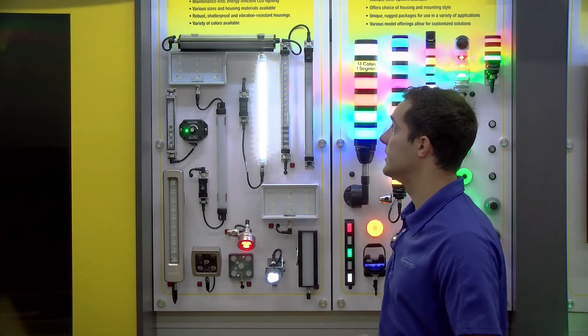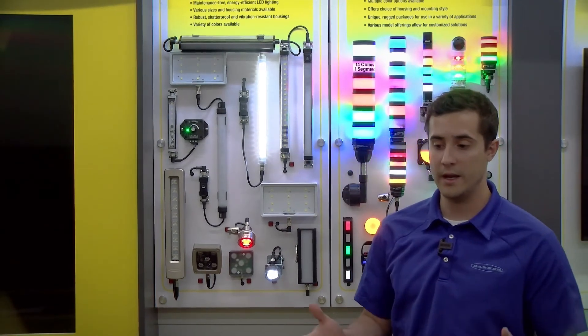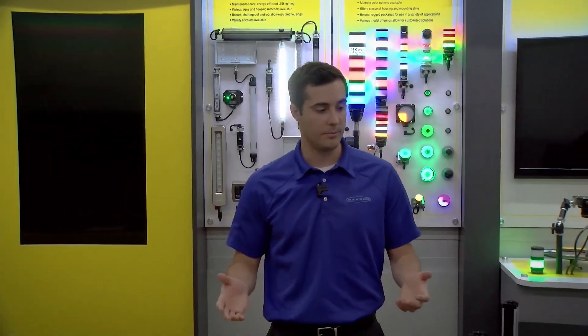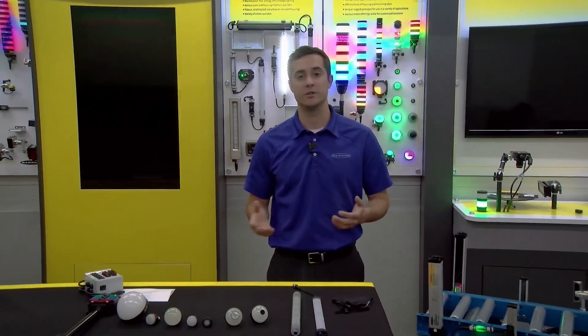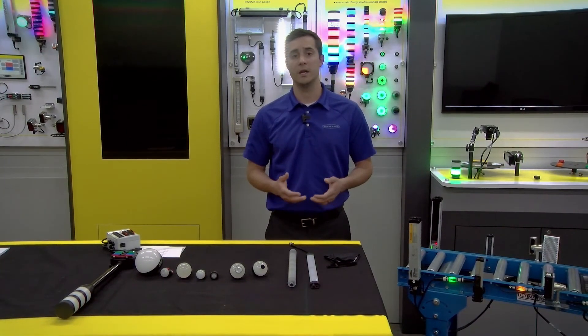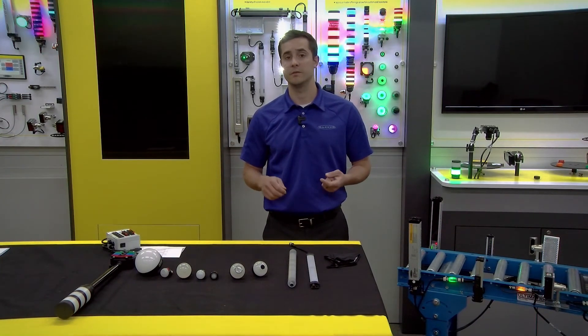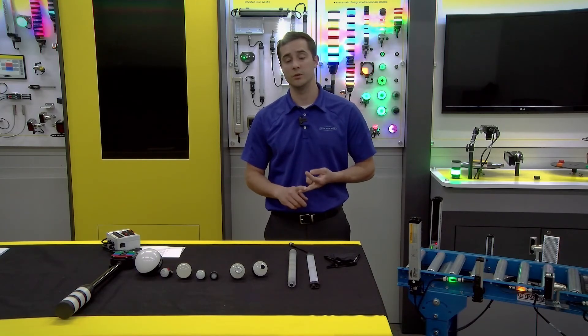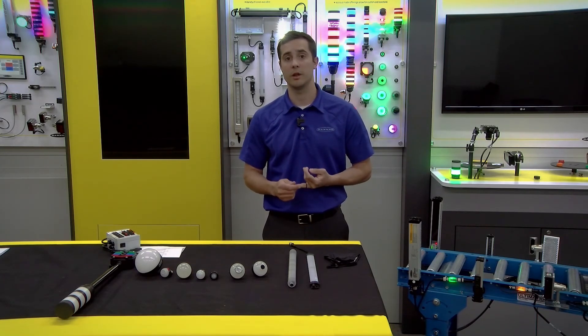So that's a quick overview of the task light product line. And with that, that completes the lighting products that I was interested in showing you today. These are products that have become very popular in the material handling space because of their durability, their ease of use, and in many cases these are plug and play solutions.